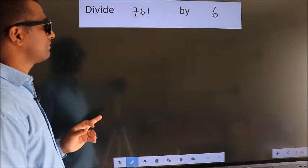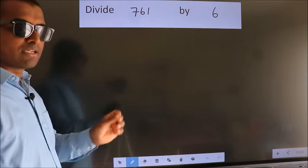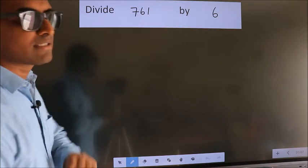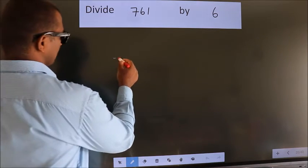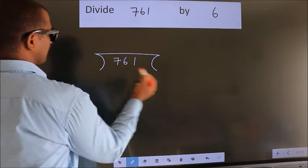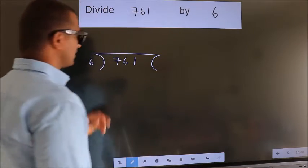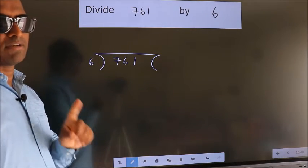Divide 761 by 6. To do this division, we should frame it in this way. 761 here, 6 here. This is your step 1.